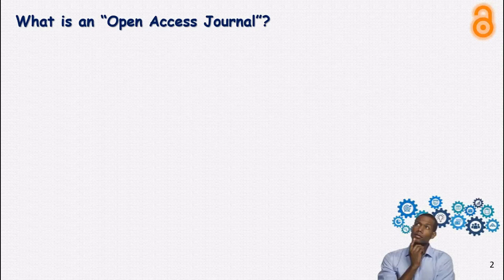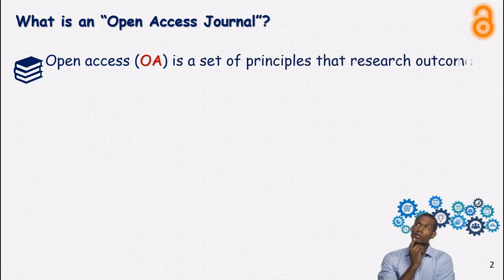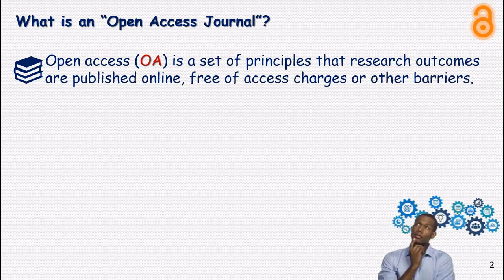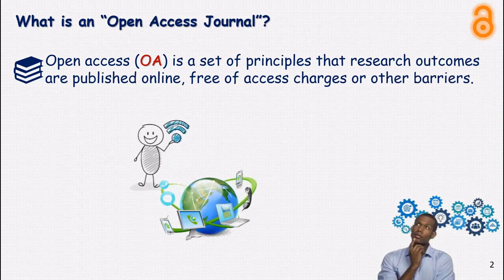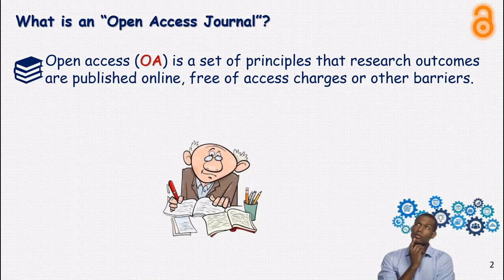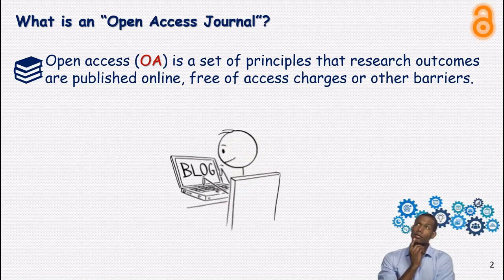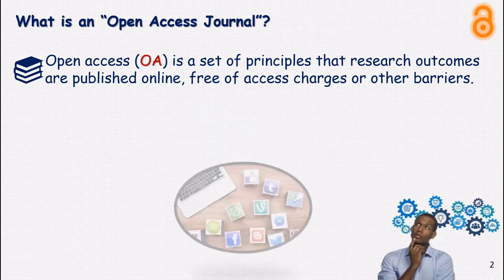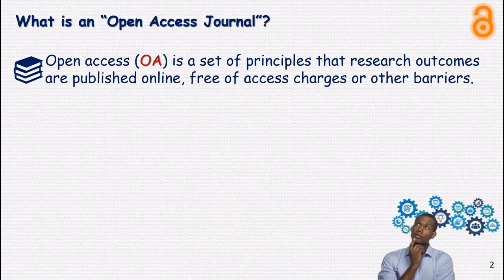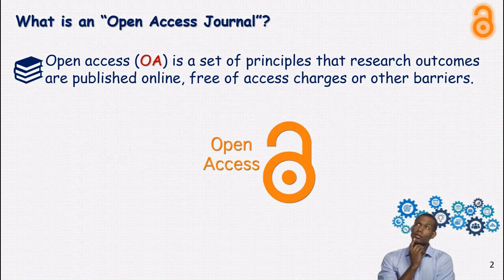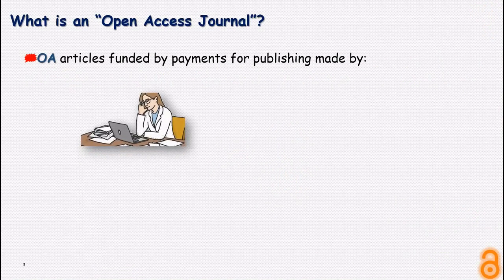Before comparing open access and subscription, it's better to focus on each meaning separately. First, let's start with open access. Open access is a set of principles where research outcomes are published online free of access charges or other barriers. With the presence of the internet, researchers no longer need access to hard copies of their desired journals to keep in touch with the most recent developments. The latest research is disseminated in many ways including blogs, university websites, social media, and open access journals that are freely available to anyone with internet access. Open access articles are funded by payments for publishing made by authors, their institutions, or funding bodies.